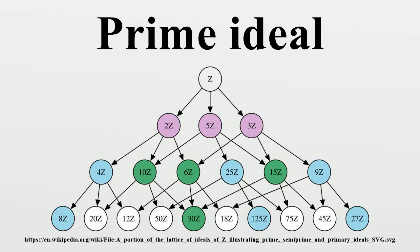The prime ideals for the integers are the sets that contain all the multiples of a given prime number, together with the zero ideal. Primitive ideals are prime, and prime ideals are both primary and semi-prime.